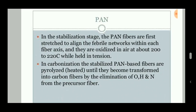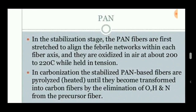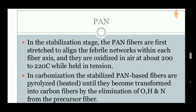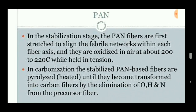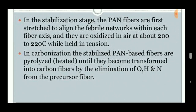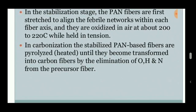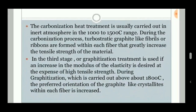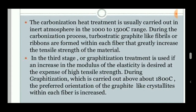Polyacrylonitrile (PAN) is the basic component fiber used in the stabilization stage. The fibers are stretched to align the fibril networks within each fiber axis and oxidized in air at about 200 to 220 degrees Celsius. In the carbonization process, the stabilized PAN-based fibers are pyrolyzed — that is, heated in the absence of oxygen — until they are transformed into carbon fibers by the elimination of oxygen, hydrogen, and nitrogen.